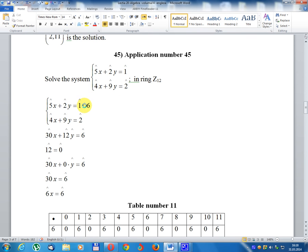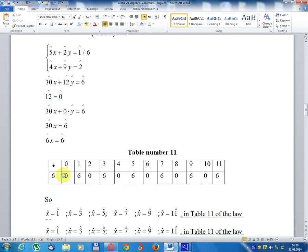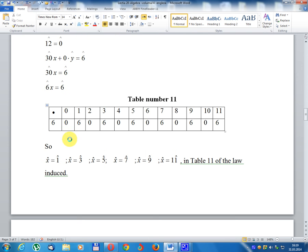Multiply the first equation by 6: 30x + 12y = 6. Since 12 = 0, we have 30x + 0y = 6, so 30x = 6. This gives 6x = 6, so x = 1, 3, 5, 7, 9, or 11.